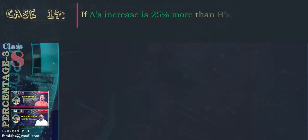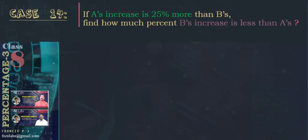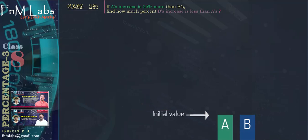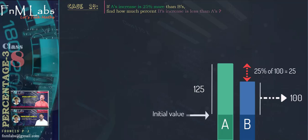Case number 14. If A's increase is 25% more than B's, find how much percent B's increase is less than A's. Let us understand the question. There are two values A and B. Let us assume both have some initial value. Now B's value is increased — we assume this increase is 100. A's value is also increased to a level which is 25% above B's increase, meaning A's increase is 25% of 100 more than B's, so A's increase is 125.